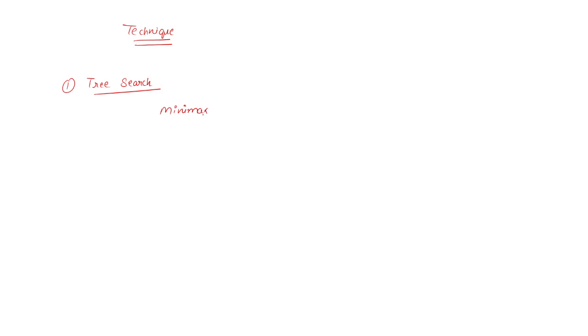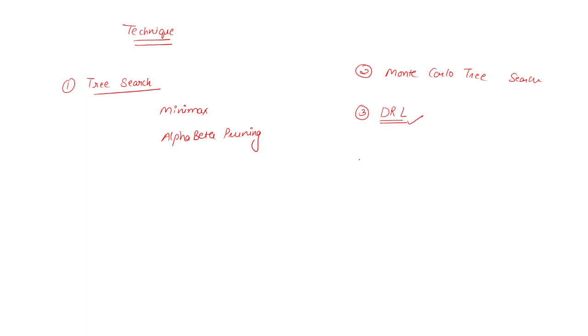Now let me share some techniques in AI game playing. The first technique is tree search, which includes the minimax algorithm and alpha-beta pruning. The second technique is Monte Carlo Tree Search, used in games with large search spaces; it combines random sampling with statistical analysis. The third is deep reinforcement learning, or DRL, which combines deep learning and reinforcement learning to handle complex state-action spaces and is used in mastering chess, Go, and Shogi.